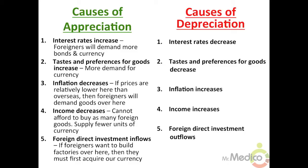Two: taste and preferences for goods increase — if foreigners demand products produced here, there will be more demand for currency and the currency will appreciate. Three: inflation decreases — if prices are relatively lower here than overseas, foreigners will demand goods here, increasing demand for currency so it will appreciate. Four: income decreases — if this economy becomes weaker than a foreign economy, it cannot afford to buy as many foreign goods, supplying fewer units of currency to the foreign exchange market, so the currency will appreciate.